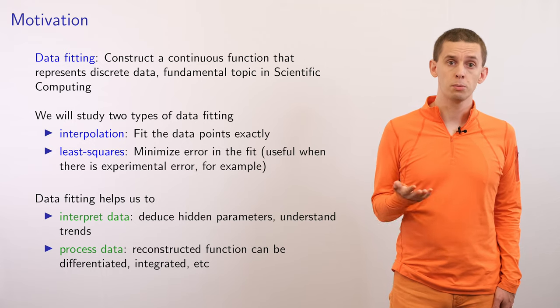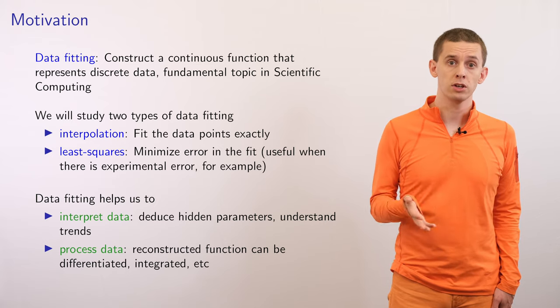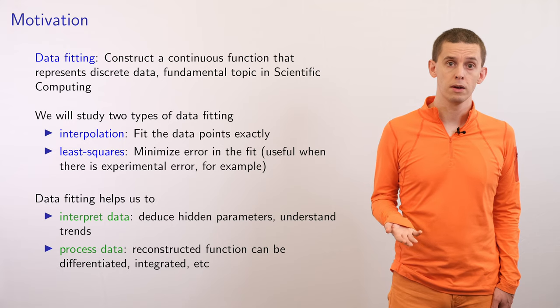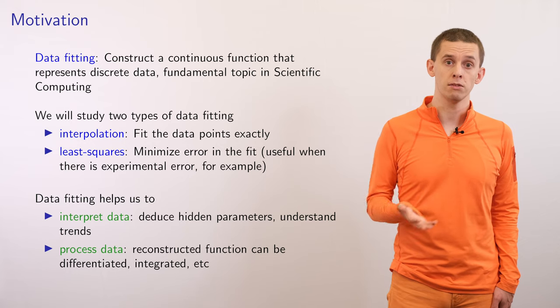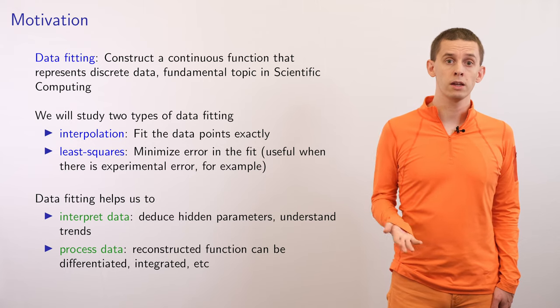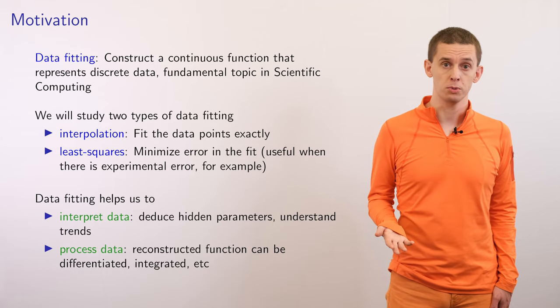We're going to look at two different approaches. The first approach is interpolation, where we try and fit a function to match our given data points exactly. The second approach is least squares, where we're going to try and minimize the error between our function and the given data. This is particularly useful in cases where our data might have noise such as from experimental measurements.